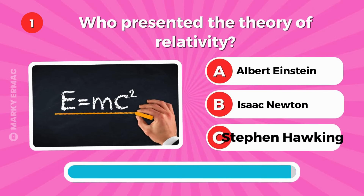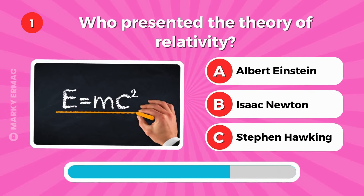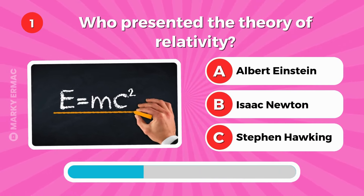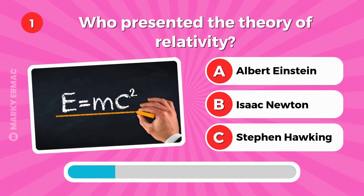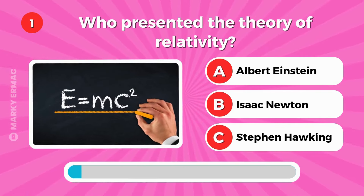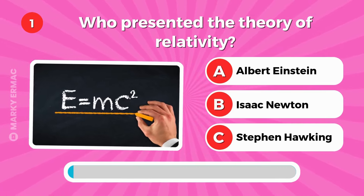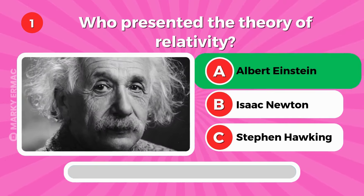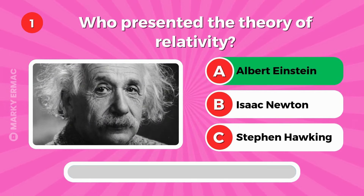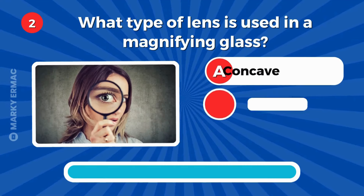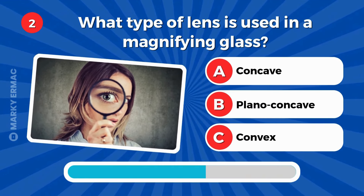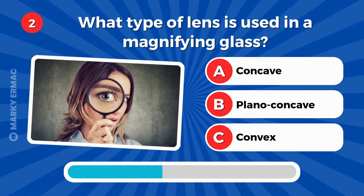First question: Who presented the theory of relativity? Albert Einstein, Isaac Newton, or Stephen Hawking? It's letter A, Albert Einstein.